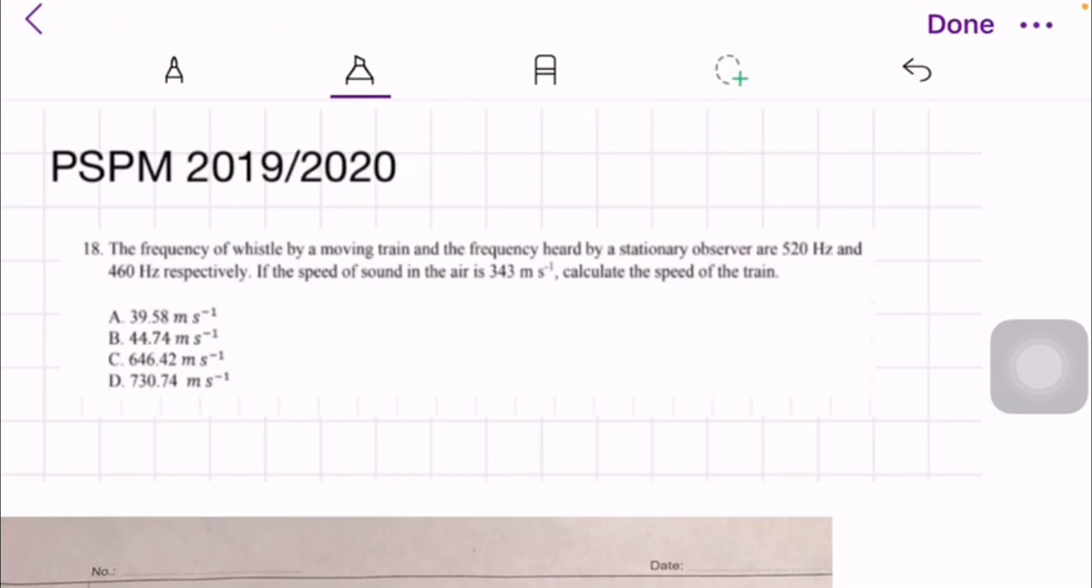For this question, the frequency of whistle by a moving train and the frequency heard by a stationary observer are 520 hertz and 460 hertz respectively. If the speed of sound in air is 343 meters per second, calculate the speed of train.